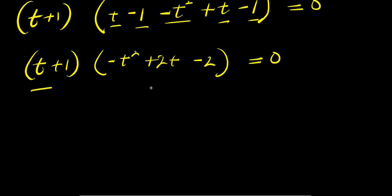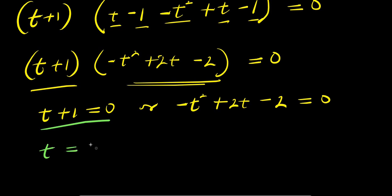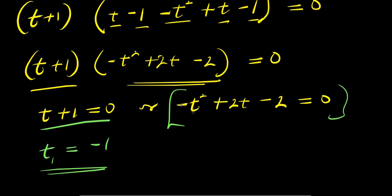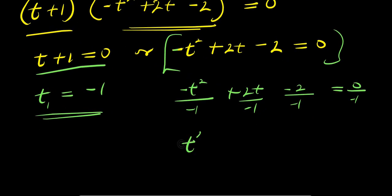We equate each factor to zero. From t+1 = 0, we get t = −1 as the first solution. For the quadratic −t² + 2t − 2 = 0, we divide each term by −1 to get t² − 2t + 2 = 0. Using the quadratic formula t = [−b ± √(b²−4ac)] / 2a, with a = 1, b = −2, c = 2.